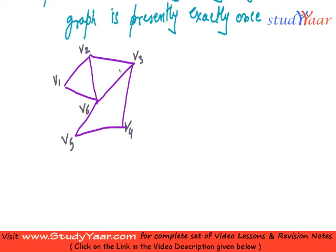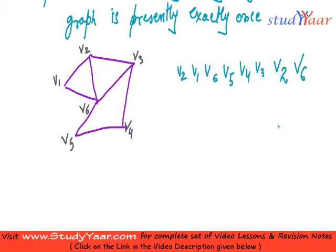So let us suppose I have a path like this: V2, V1, V6, V5, V4, V3, and V2. And let us suppose we have V6 as well. So I am going to say that this is a Eulerian path. Let us see why.